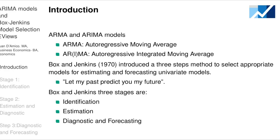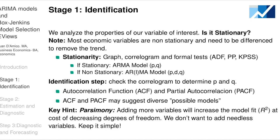In the identification step, we analyze the properties of our variable of interest and check if it is stationary, because the Box-Jenkins method works with stationary variables. Most economic variables are non-stationary and need to be differenced to remove the trend. We test for stationarity by looking at the graph, the correlogram, and conducting formal tests. If the variable is stationary, we estimate an ARMA model; if non-stationary, we work with an ARIMA model. I have a separate video covering these tests in detail, but we'll do a quick review here.